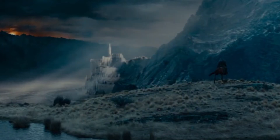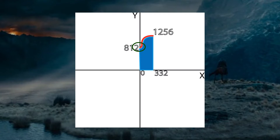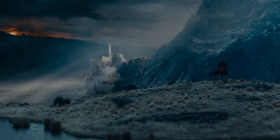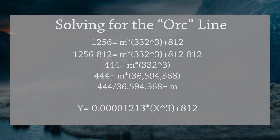Now that all the prep work is done, we can solve for the normal equation — not the integral equation yet, just the standard y = mx + b equation. The first step is really simple: I intentionally put 812 at zero, so we already know the y-intercept. The next thing we need to do is solve for the slope — what in a standard y = mx + b equation is m. To do that, we plug in the other endpoint, (332, 1256). I went ahead and solved for that and wrote out each individual step for you to see.